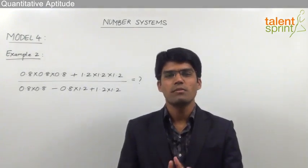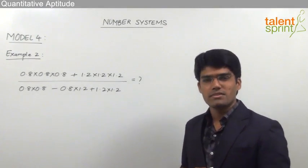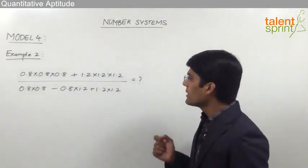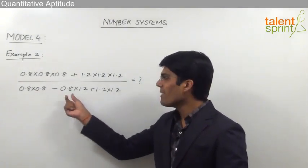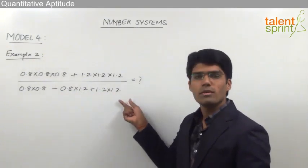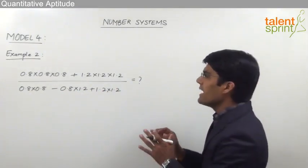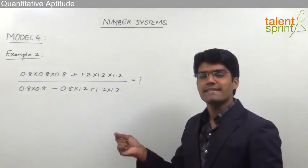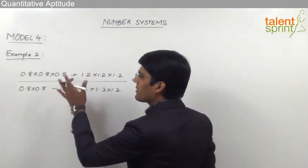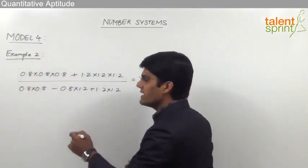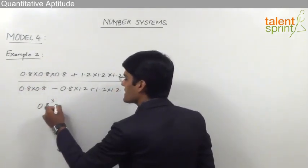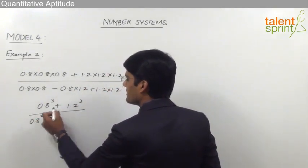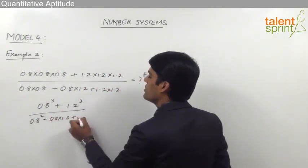Let us now take the second example based on the formulae from algebra. The question is: (0.8³ + 1.2³) ÷ (0.8² - 0.8×1.2 + 1.2²). We need to simplify this. Though it appears complicated, if you identify the correct formula the answer can be obtained in a few seconds.